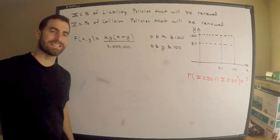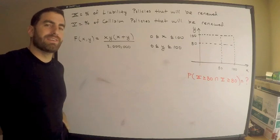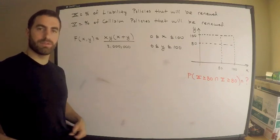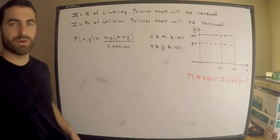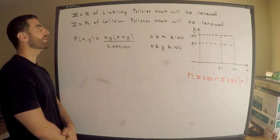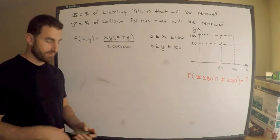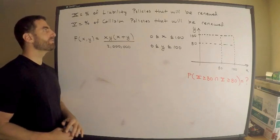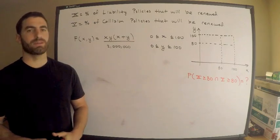It's one of those instances where you really don't even need to write down the definition of your random variables. In terms of answering the question, we don't even care what they represent. Regardless, I wrote them down. X is the percent of liability policies that will be renewed and Y is the percent of collision policies that will be renewed.